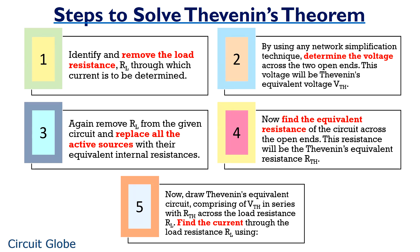Basically any network simplification theorem is applied to get the value of current through or voltage across the load. In a similar way, the main purpose of Thevenin's theorem is to determine the current flowing through the load in a complex network using an equivalent simplified network. So for this, firstly you need to identify the load resistance across which the flowing current is to be determined.